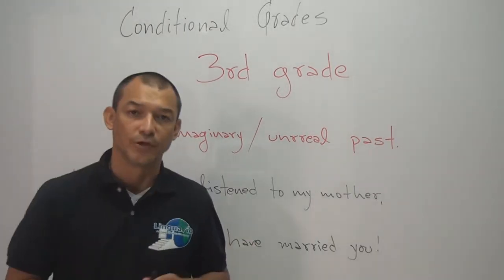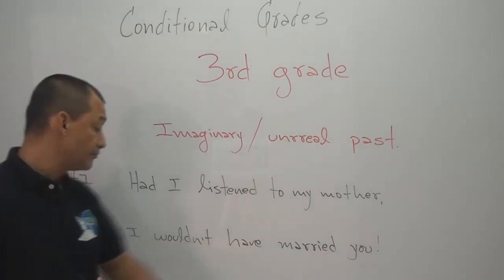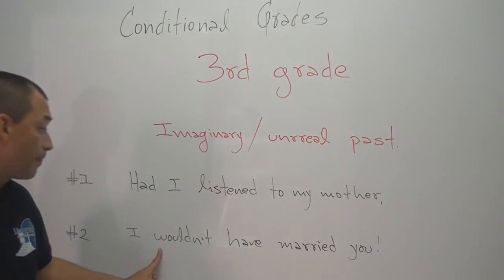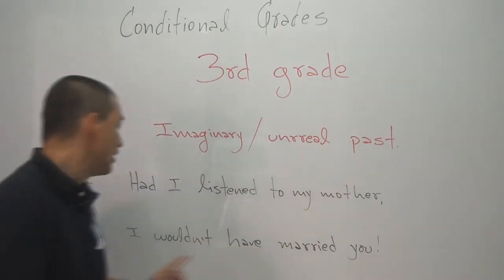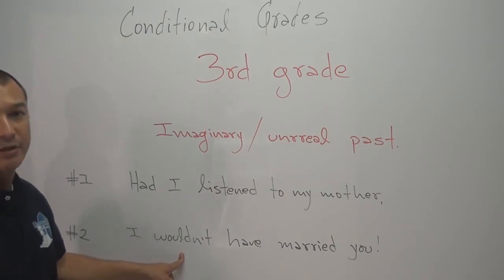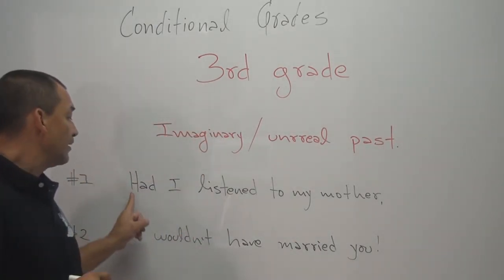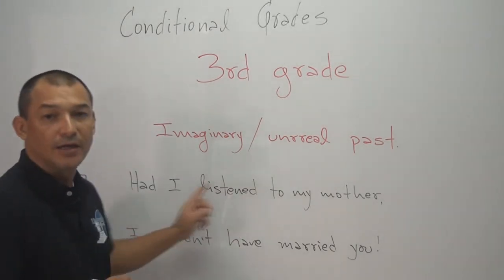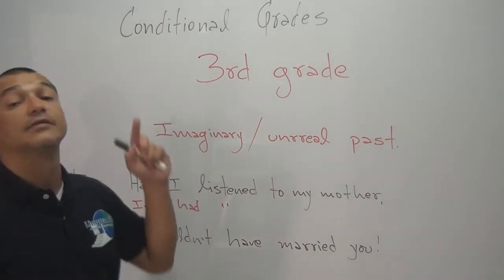Vamos a mirar otra situación, caso número dos. Esto es muy cercano a la realidad: 'Had I listened to my mother, I wouldn't have married you.' Si hubiese escuchado a mi madre, no me habría casado contigo. ¿Cuál es la realidad? No escuché a mi madre. ¿El resultado? Sí me casé contigo. Eh, mentiras — I love you. ¿Qué quiero que observen aquí? Podemos empezar la primera cláusula condicional así: 'Had I' — 'had I listened.' Sería lo mismo que decir 'if I had listened.' Es lo mismo — muy elegante.